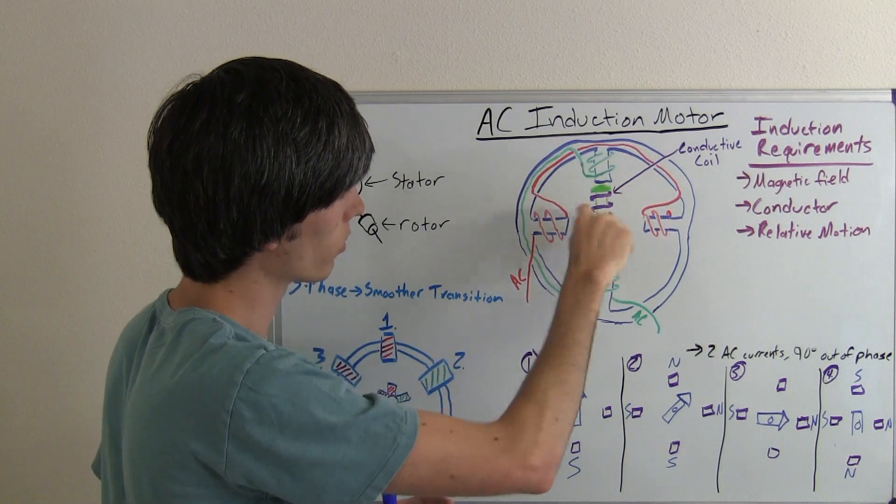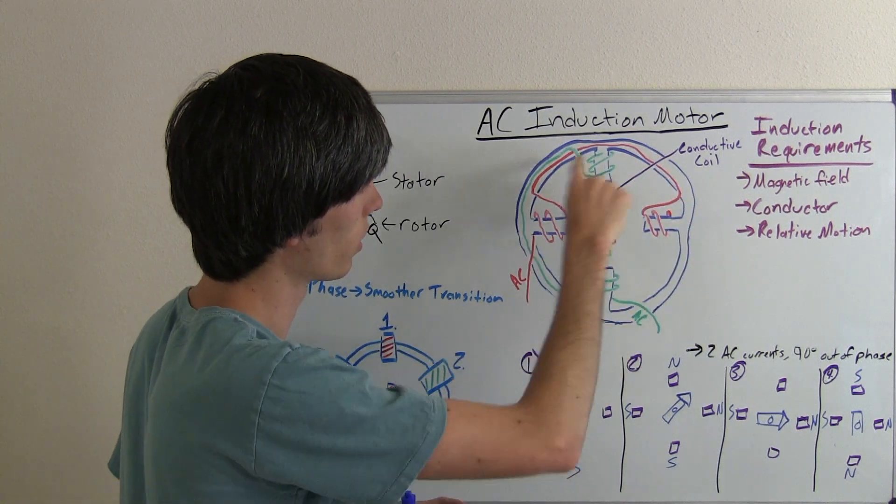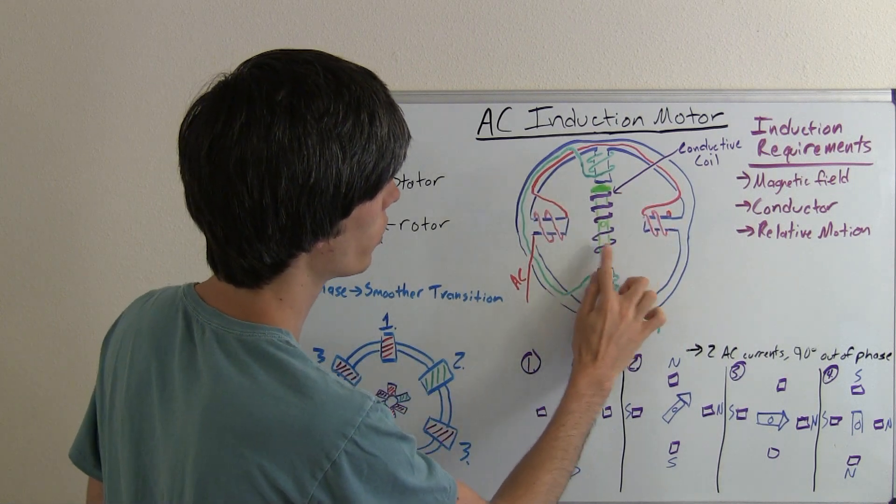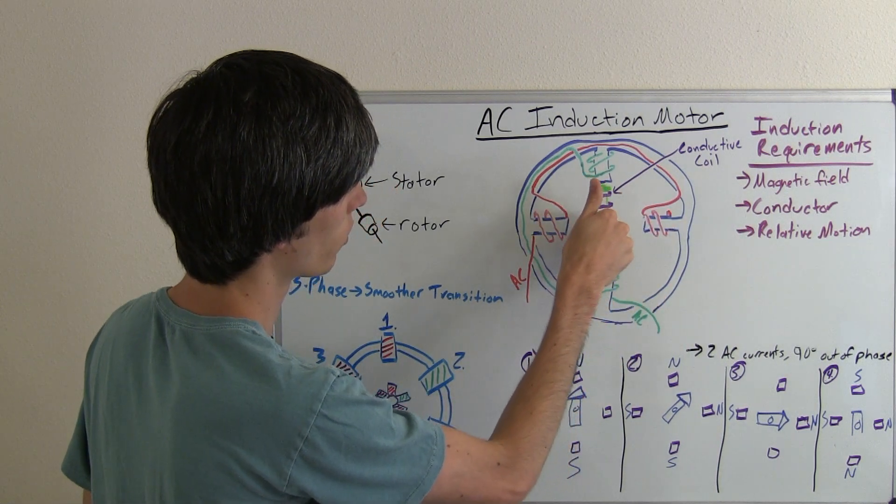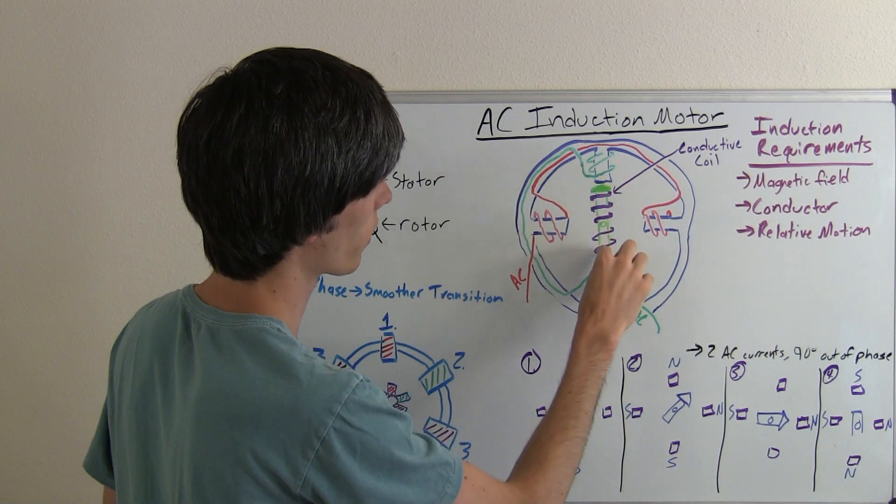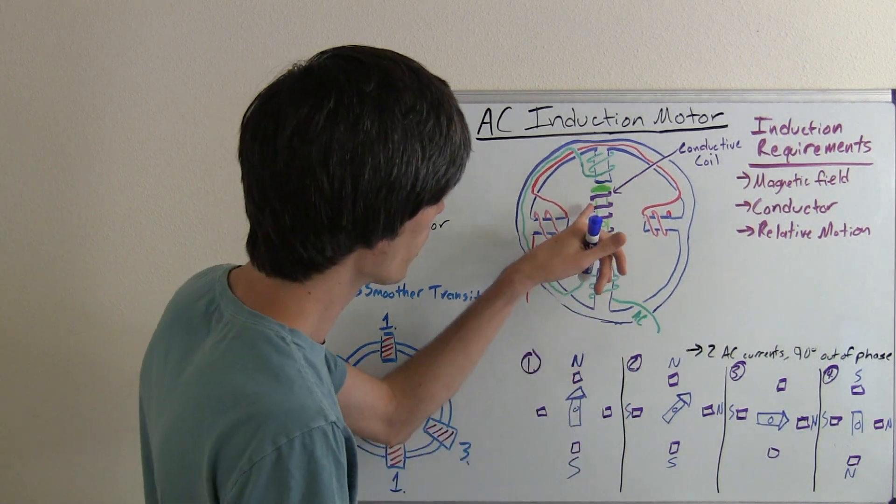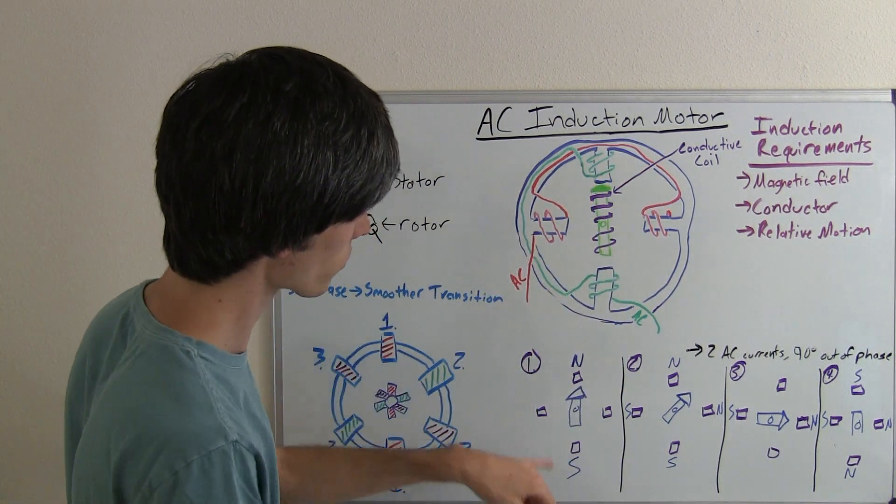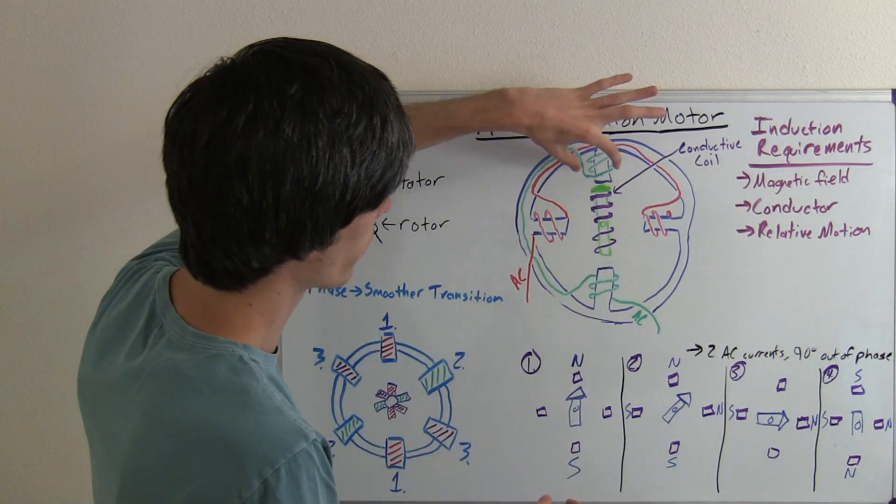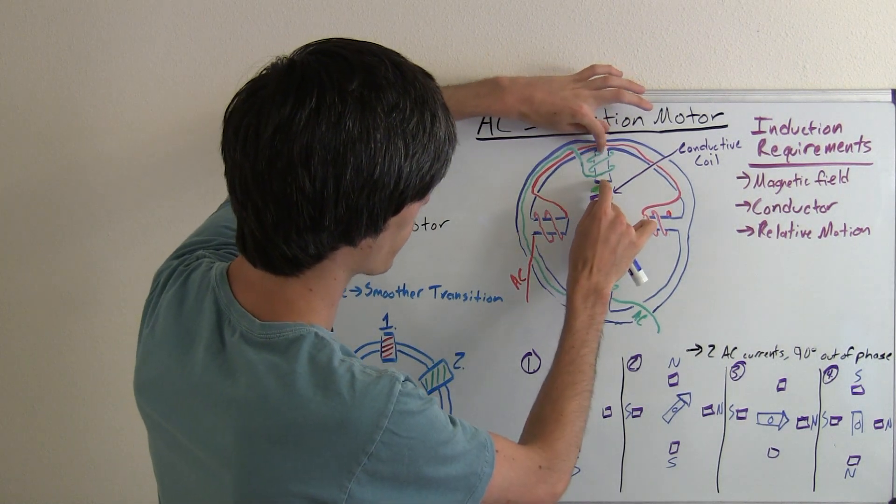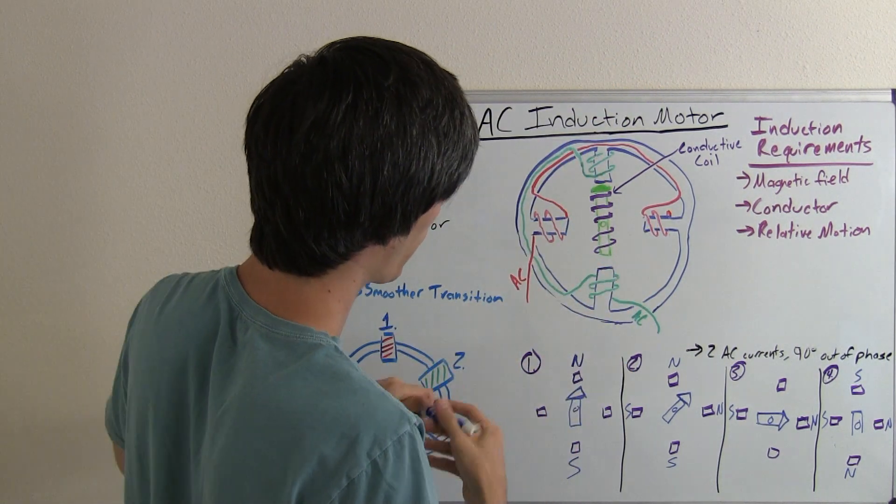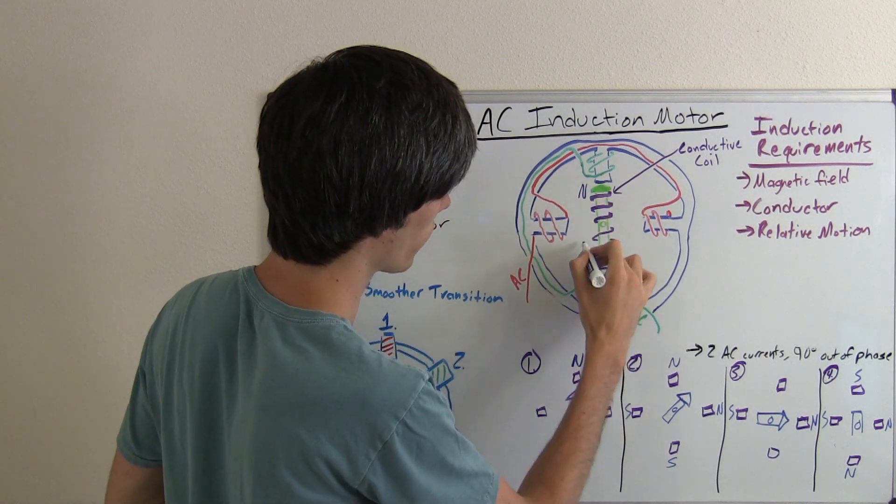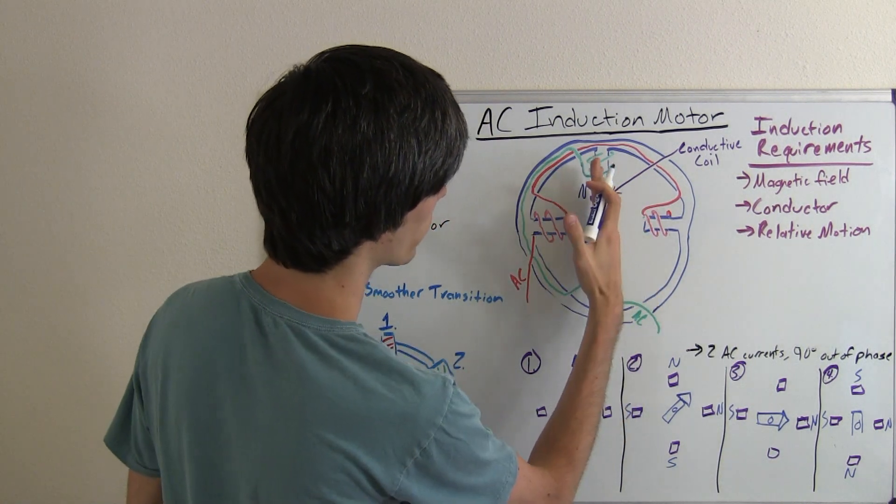So as we have a rotation of the magnetic field in this direction, we're going to induce a current in this rod here, so that this is going to be north, this is going to be south. So what that rod is going to do is try and align itself with the magnetic field. So at step one, when we've created a north and south pole here and here, and a north and south pole here and here, and this is going to have a north pole induced here and a south pole induced here, it'll align itself like that.